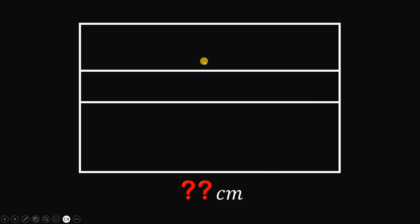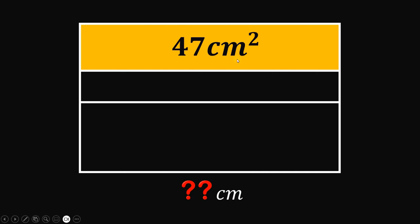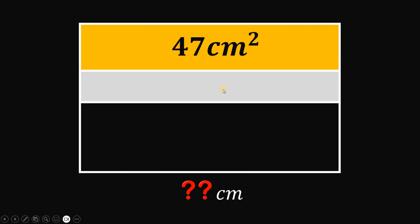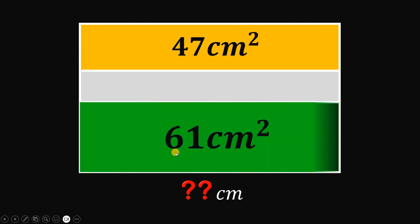Given this rectangle, the area of the top portion must be equal to 47 square centimeters. We don't have given area for the gray region, but the bottom rectangle must be equal to 61 square centimeters.